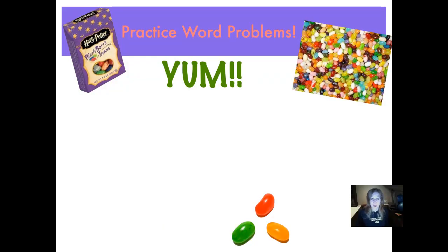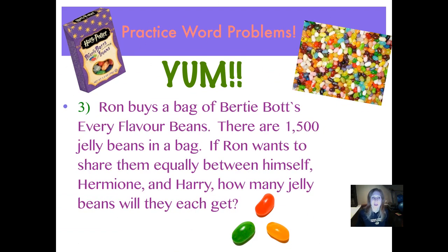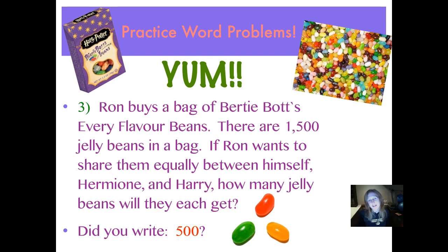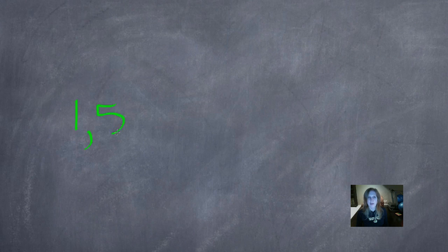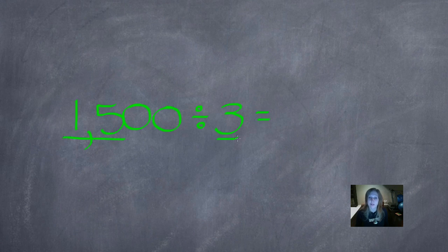Now we'll practice with word problems. Number 3: Ron buys a bag of Bertie Bott's Every Flavor Beans. There are 1,500 jelly beans in a bag. If Ron wants to share them equally between himself, Hermione, and Harry, how many jelly beans will they each get? There were 1,500 jelly beans in all, and we're dividing them equally between 3 people. We underline our non-zero digits. 15 divided by 3 is 5. Now we just count our zeros — 1, 2 — and add them: 500.